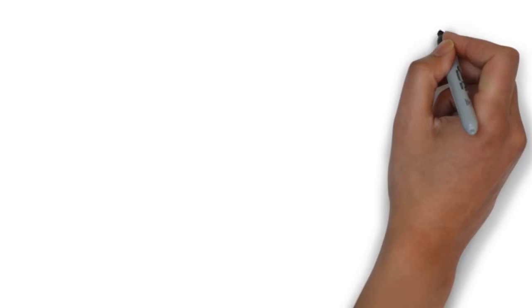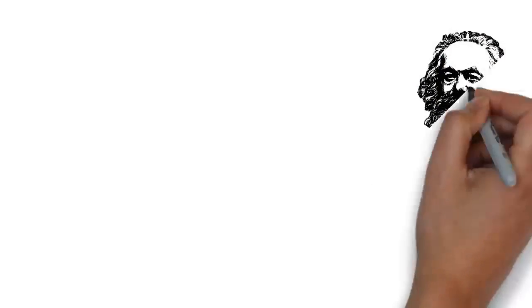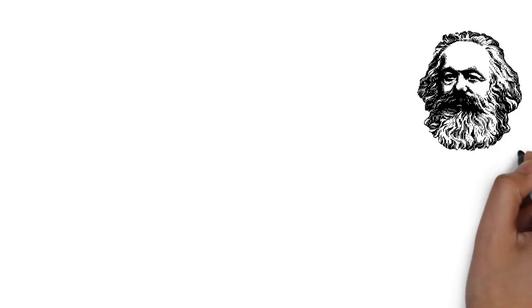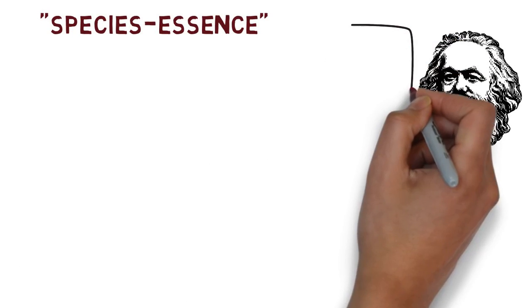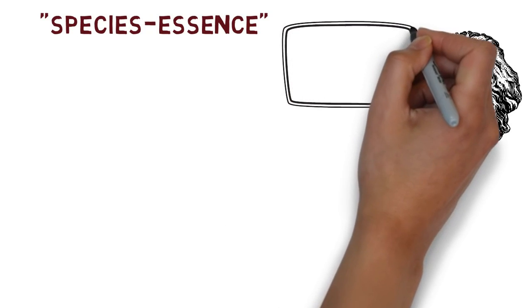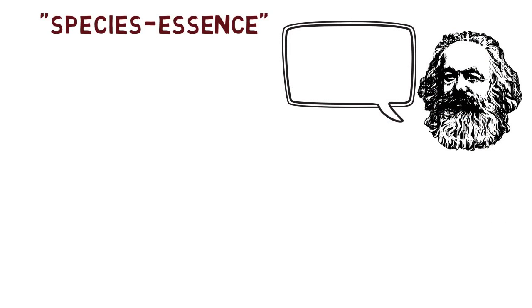Marx believed that society needed a better means of distributing wealth, but also a better way of tapping into our full human potential, or what Marx called our species essence. According to Marx, what we do is directly connected to who we are. It defines us and lets us express our full humanness.